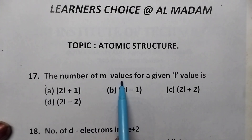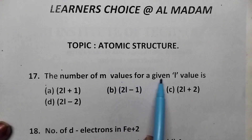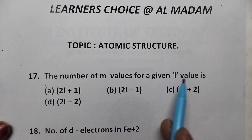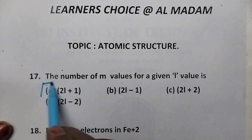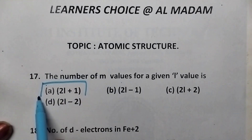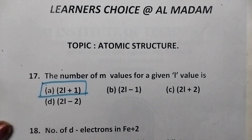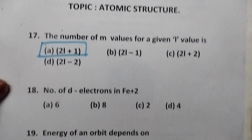The number of M values for a given L value is — it is always equal to 2L plus 1. So option A is the right answer.